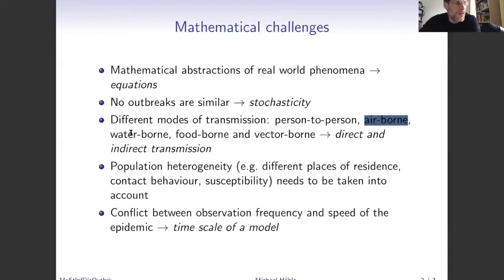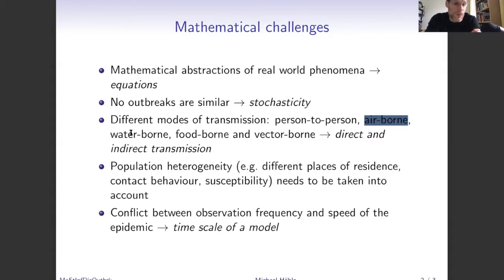For waterborne diseases, there is of course a person-to-person transmissible component, but the main driver may be a pathogen present in the water. Similarly, foodborne diseases like salmonella involve a contaminated food product as the main problem — with very little or no person-to-person transmission. In such cases, the SIR models we have discussed may not be the appropriate way to model the situation, because the transmission mechanism is different.